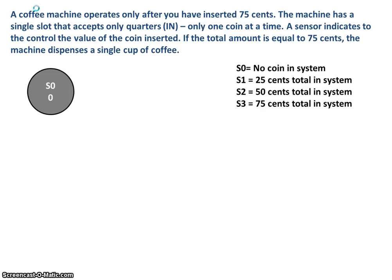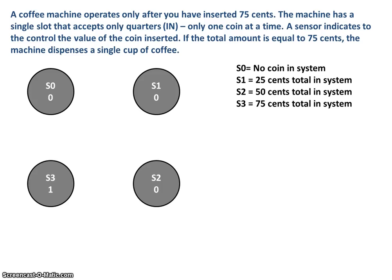Here's our state S0, and the output 0 is for the coffee — meaning coffee is not dispensed in that state. State S1, state S2 means we have 50 cents if we're ever in that state. And when we're in state S3, we have 75 cents, so the output of coffee should be dispensed. Now let's look at the state transitions.